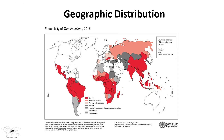The World Health Organization has identified the endemicity of Taenia Solium. It's essentially worldwide in distribution, but also associated with poor sanitary conditions. So it's not just the fact that we eat pork, because the United States raises a lot of pork. We have almost no autochthonous transmission of Taenia Solium from pork products raised within the United States itself, or in Canada for that matter.